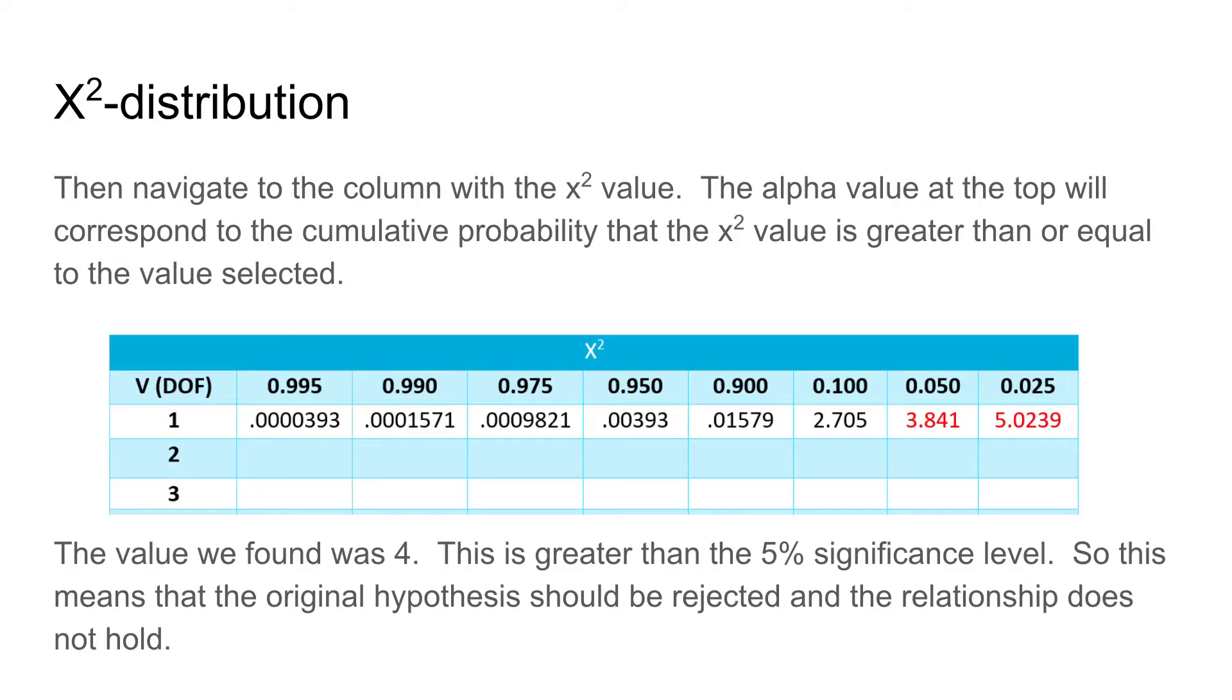Next, you navigate to the table and find the correct row for your degrees of freedom. Then you compare the chi-squared value that you calculated, which was 4. We know the answer is in between here.